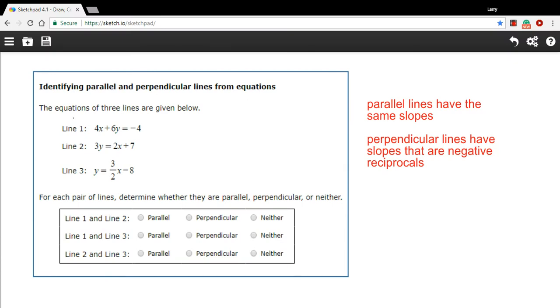In this problem, we are given the equations of three different lines, and we're being asked to compare their slopes, determine which lines are parallel, which are perpendicular, or if they're neither.